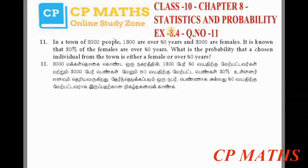Hi students, CP here. Class 10 standard, Chapter 8 - Statistics and Probability, Exercise 8.4, Question number 11. In a town of 8,000 people, 1,300 are over 50 years and 3,000 are females.